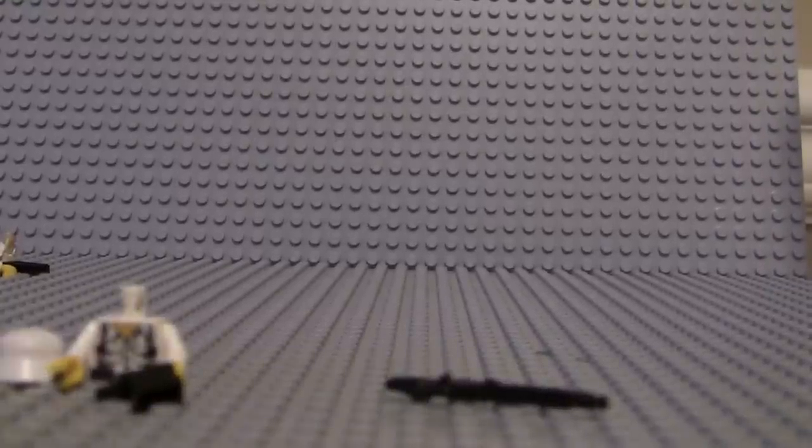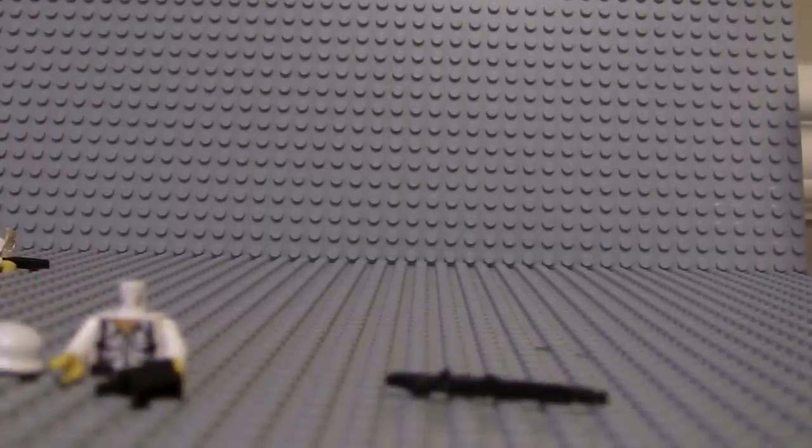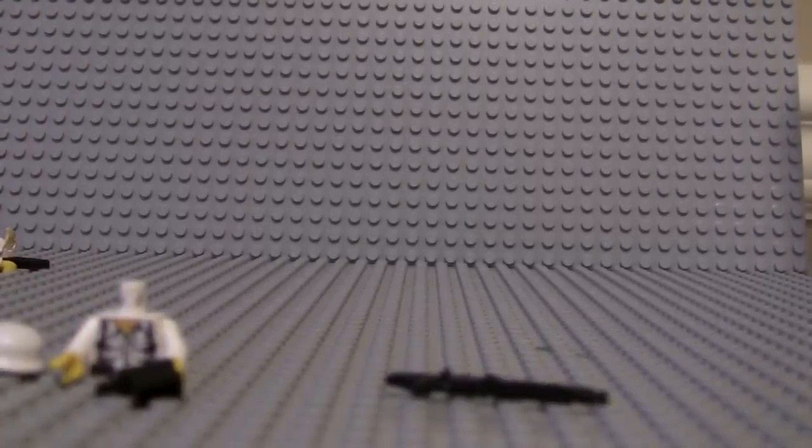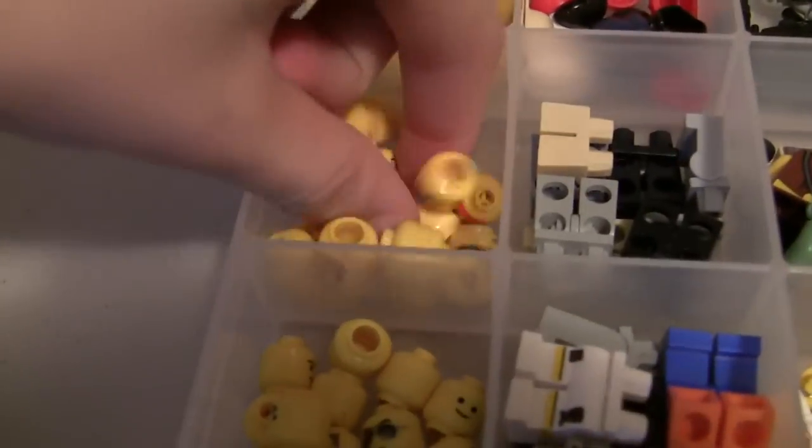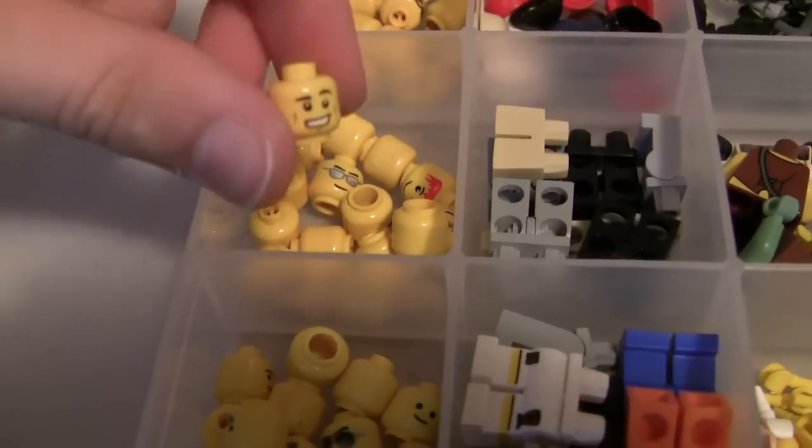Okay, so we got our Brick Arms accessories. Now we need to find a head, so we'll go back into wherever you keep your heads. I have a whole minifigure storage. Let's do yellow because we already got some yellow arms on there. Let's find a good looking face because it's going to be like a machine gun face.